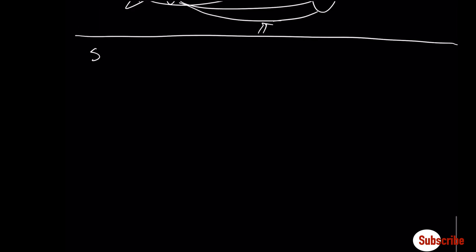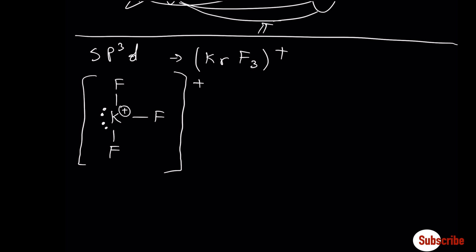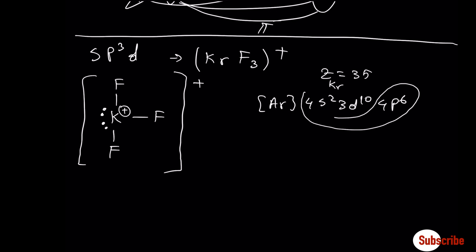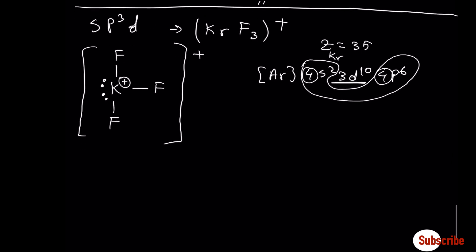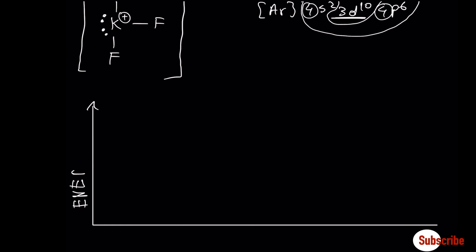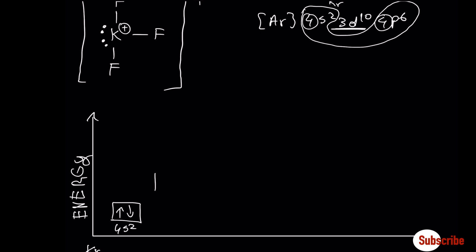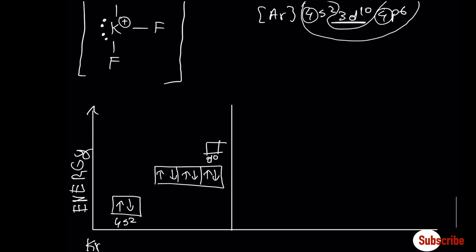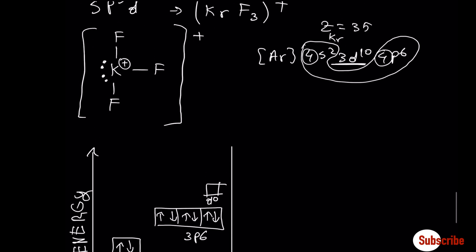Let's move now to sp3d. A typical example is xenon trifluoride cation. Let's draw the Lewis structure and write the electronic configuration. For the diagrams, we are going to use only the most outer shell, which is four. In this case, we are going to leave out the 3d. As you may see, xenon has three bonds and two lone pairs around the central atom.